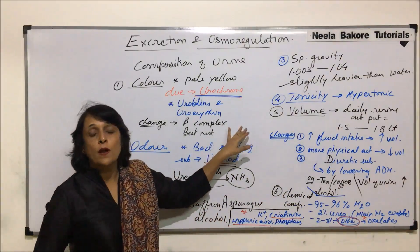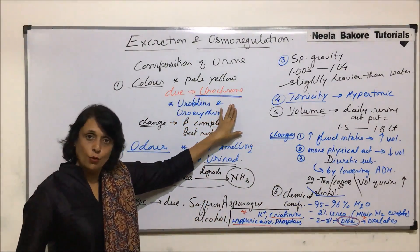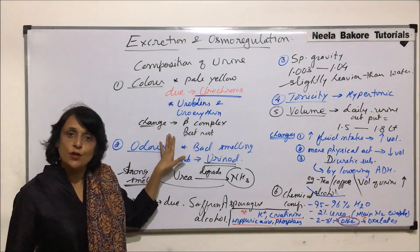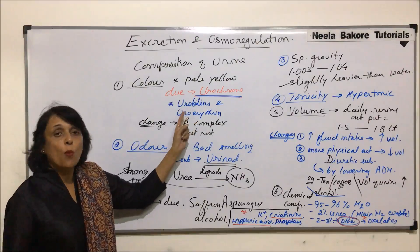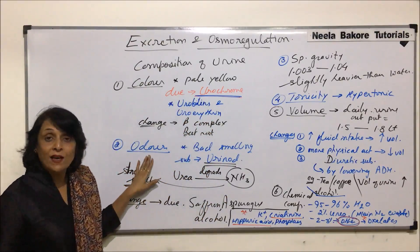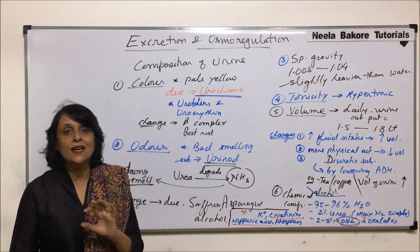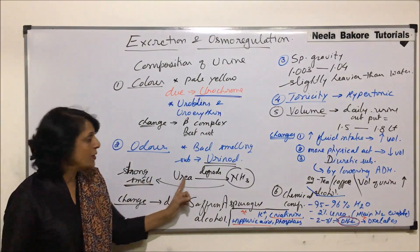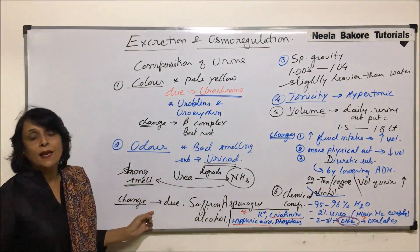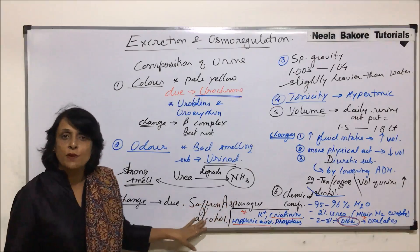In summary: normal urine color is pale yellow due to the pigment urochrome, formed from the breakdown of hemoglobin. The color may change because of certain substances like drugs and B-complex. There are 2 more pigments — urobilins and uroerythrine — but their concentration is very less. The smell is bad because of urinoid, but urine soon smells strongly due to urea degrading into ammonia. The smell can also change with substances like saffron, asparagus, and alcohol.